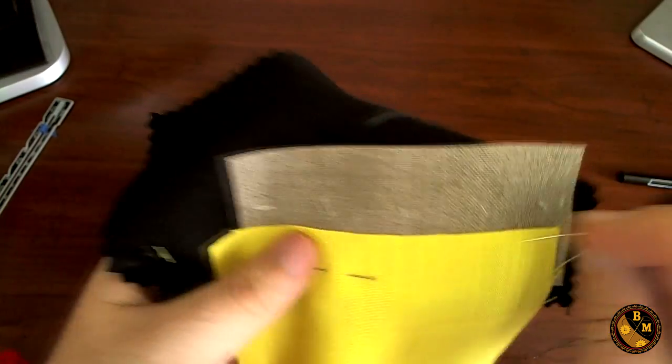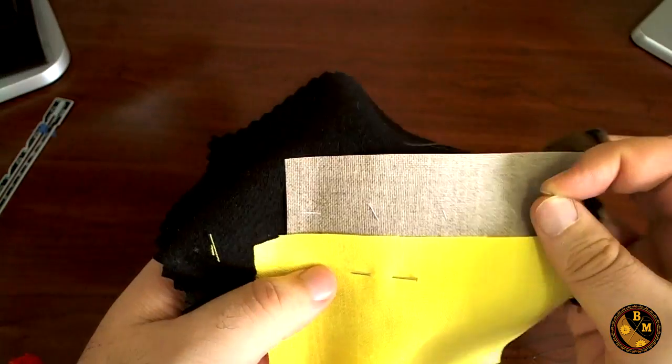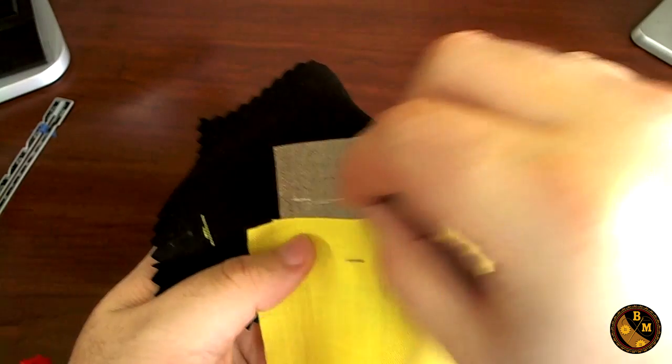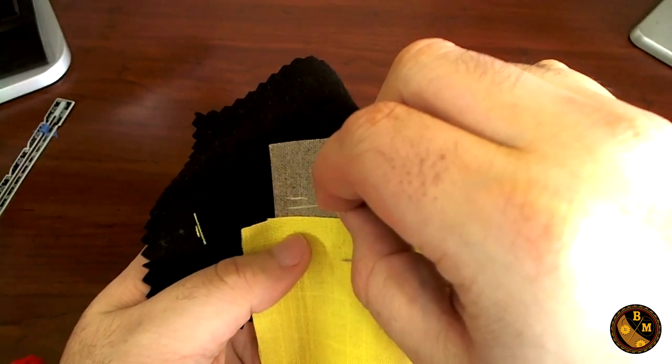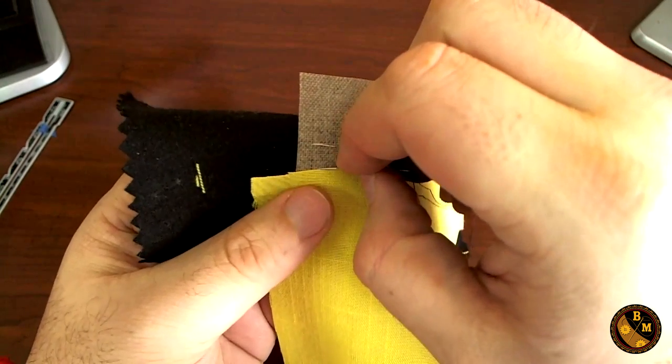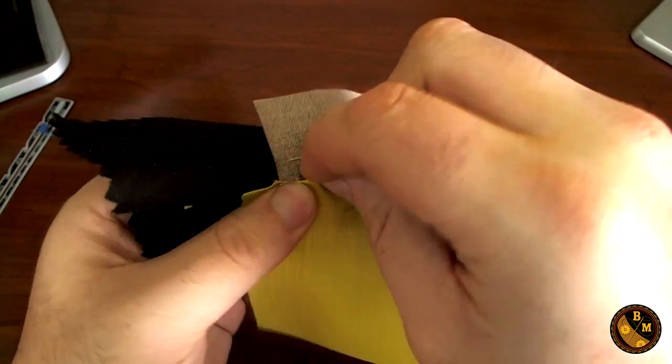Unlike other stitches that go from right to left, this stitch goes from left to right. However, my needle will still be pointing to the left. Back and to the left. Let's start out the stitch by tacking off on the canvas.